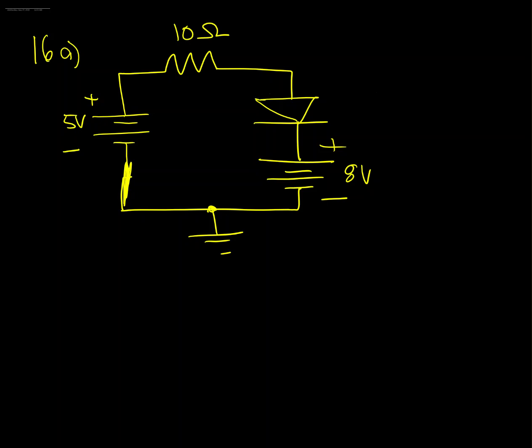The question is we want to determine if the diode is forward or reverse biased, and we want to also figure out the voltage across the diode. But we need to figure out if it's forward or reverse biased before we can do that.